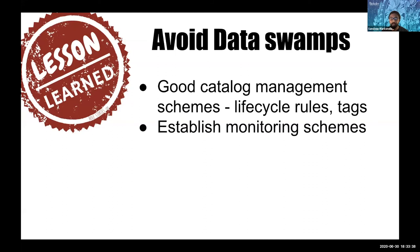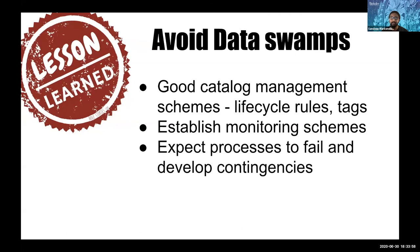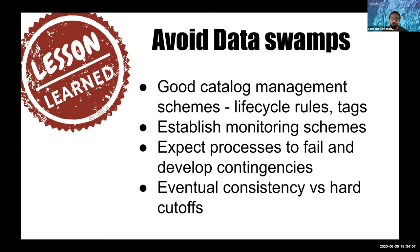You also need to look at monitoring mechanisms, mainly because this is a heavily distributed system. Keeping track of what's running and where it's running becomes very important. That was the main reason we built Nessie, which is a workflow orchestrator for our daily processes. Expect processes to fail and develop contingencies for it, especially in streaming. Also plan for use cases where you're okay with eventual consistency and cases where you have hard cutoffs on data integrity.